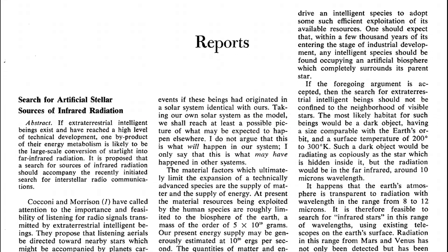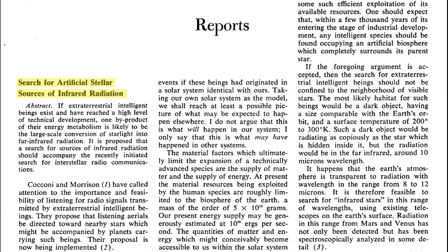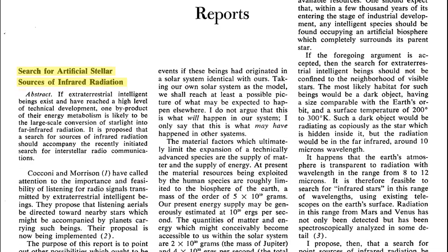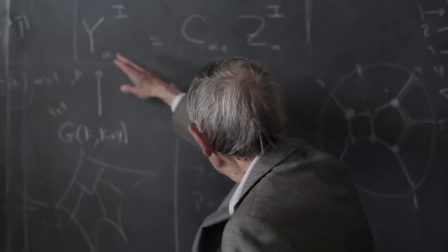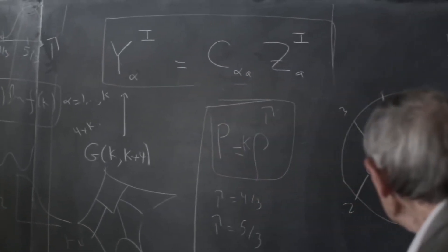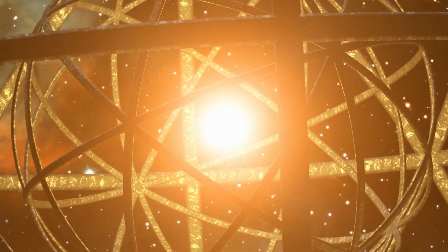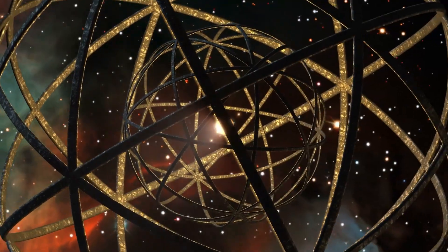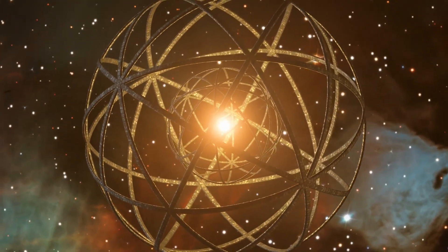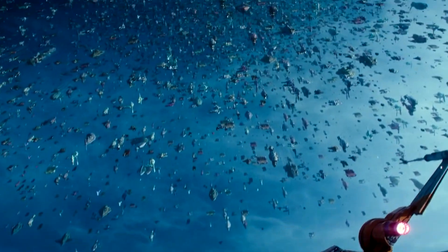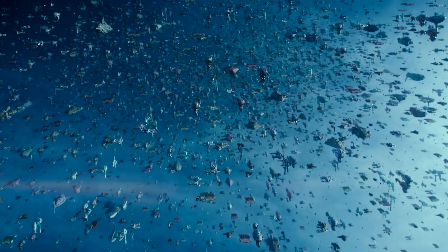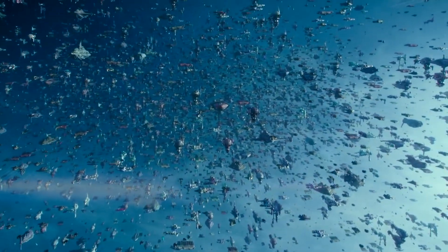In his 1960 paper, Search for Artificial Stellar Sources of Infrared Radiation, physicist and mathematician Freeman Dyson proposed the idea of a megastructure. Now commonly known as a Dyson Sphere, it was conceived to spot other advanced civilizations in our universe, particularly Kardashev Type 2 civilizations that are capable of controlling all of the available energy in their stellar system.